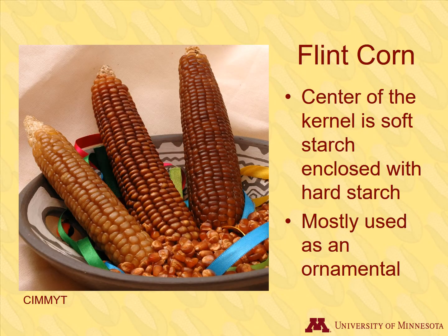The center of flint corn is soft starch, and it has a hard starch layer that encloses the grain. This protects the kernel and allows for longer term storage. Flint corn can come in many colors, including blue, green, red, yellow, and white. Flint corn has little economic importance in the US, other than as an ornamental, and is sometimes called Indian or calico corn. Native Americans grew this type in northern regions before Europeans arrived.